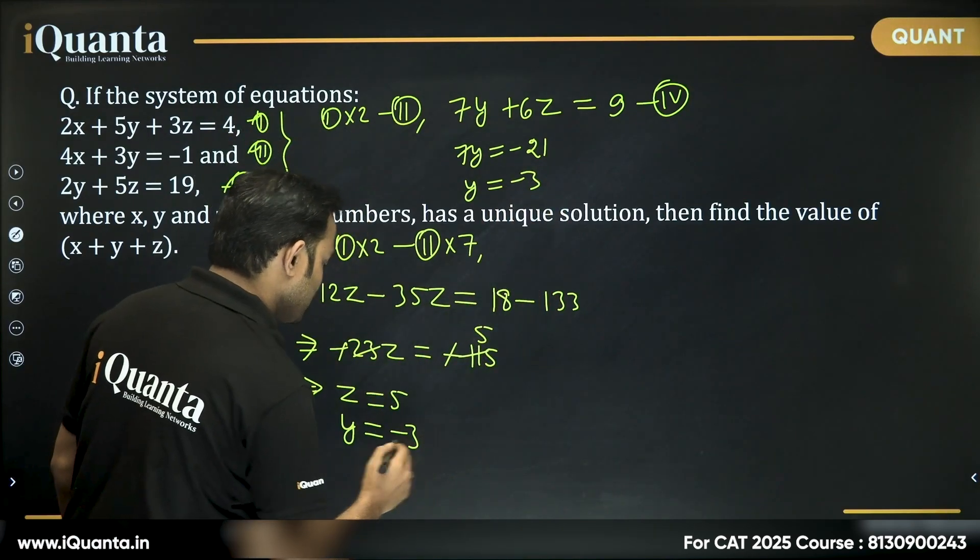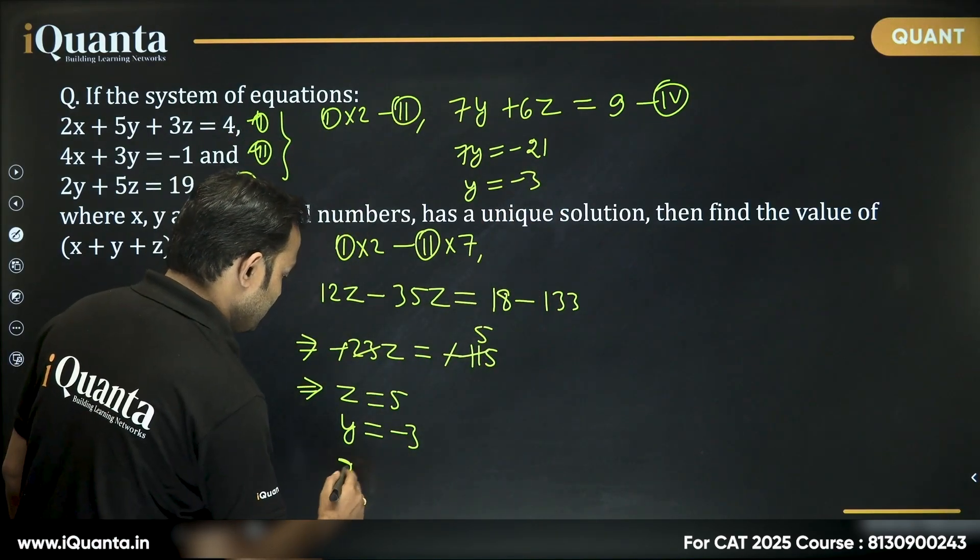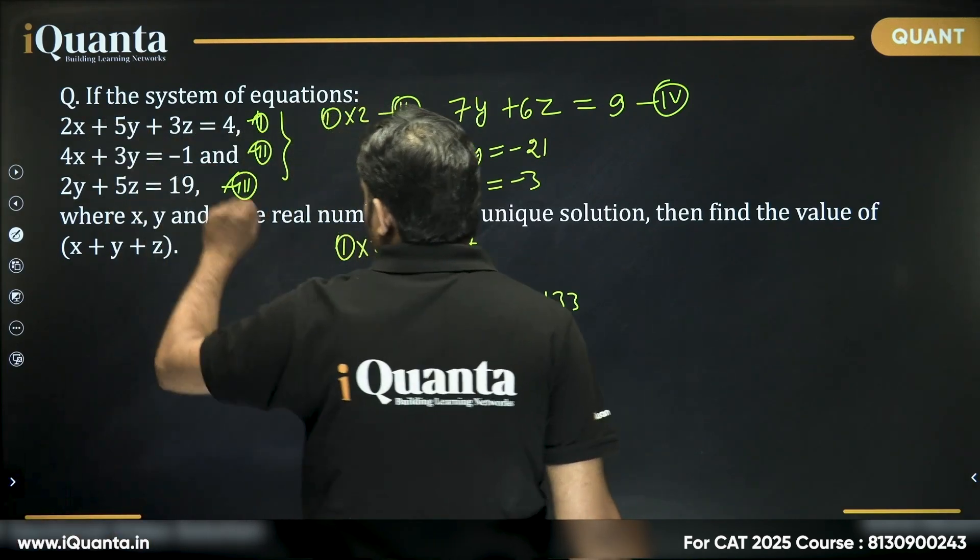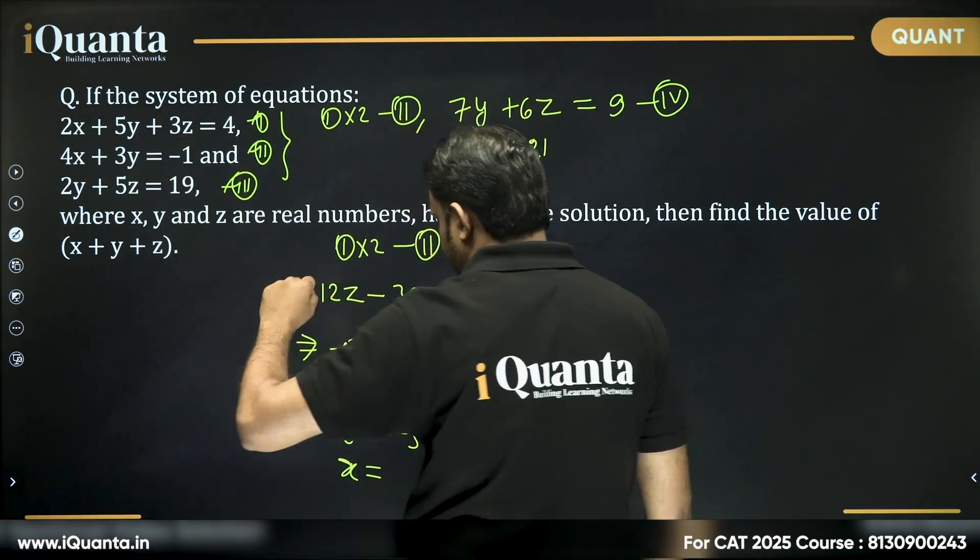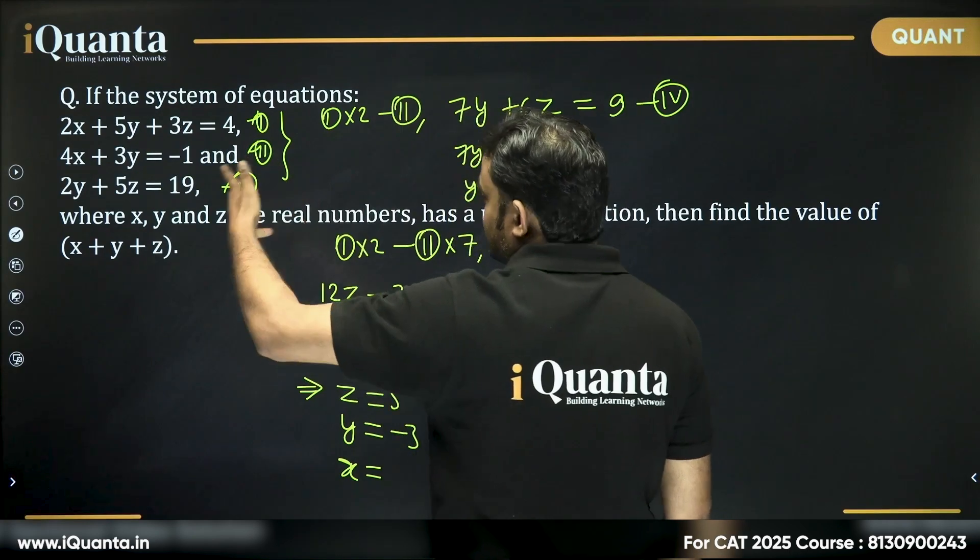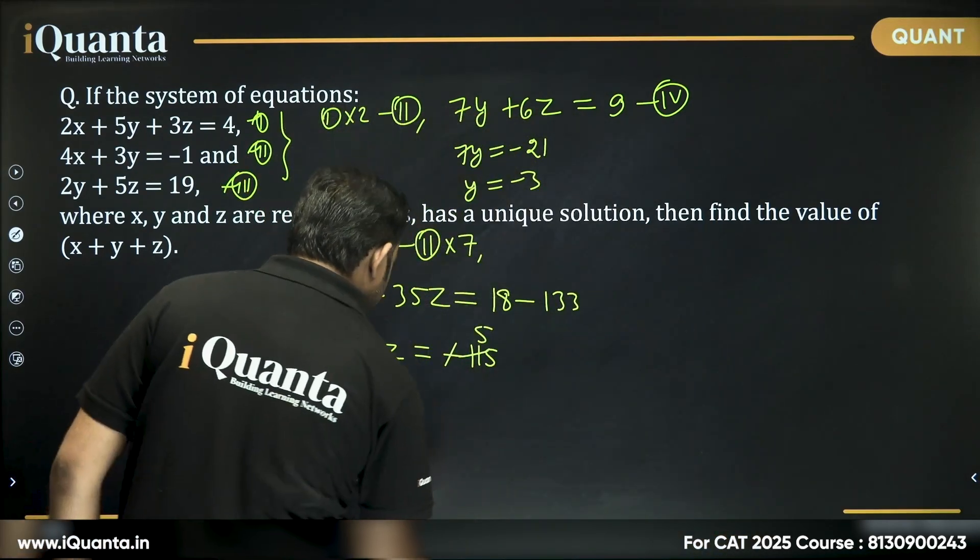What will be the value of x? We can put the values here. 5y is -15, 3z is +15, they cancel out. So 2x = 4, giving x = 2.